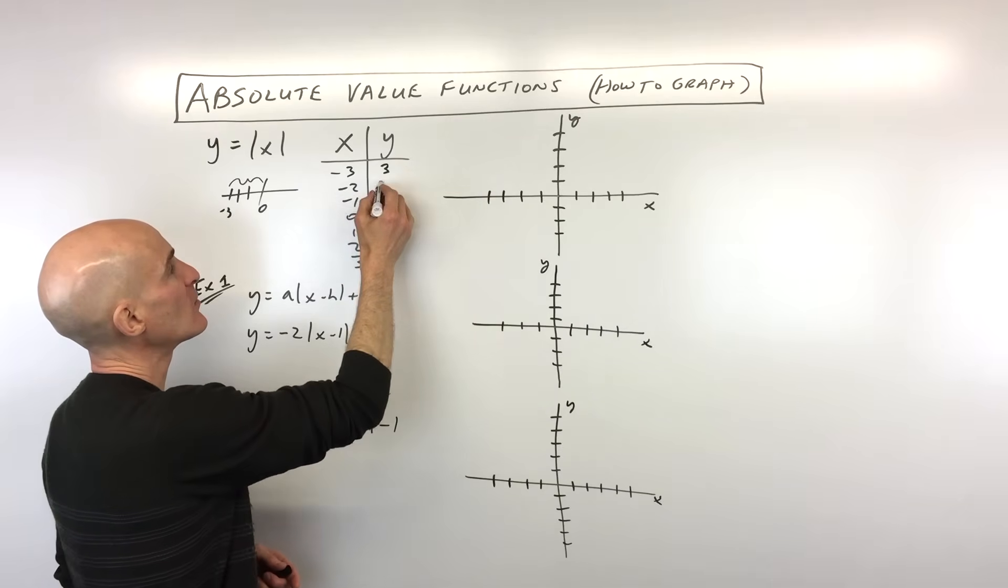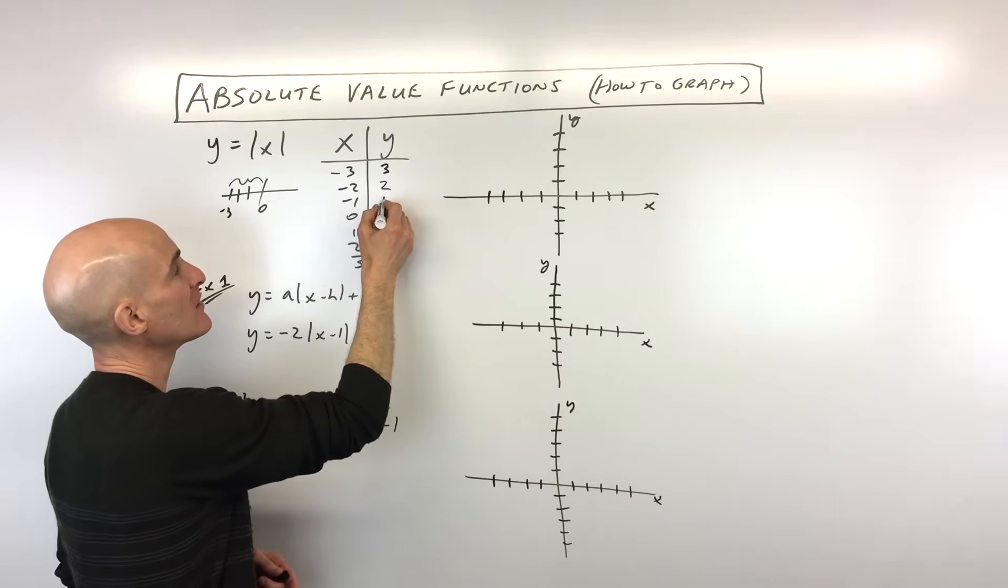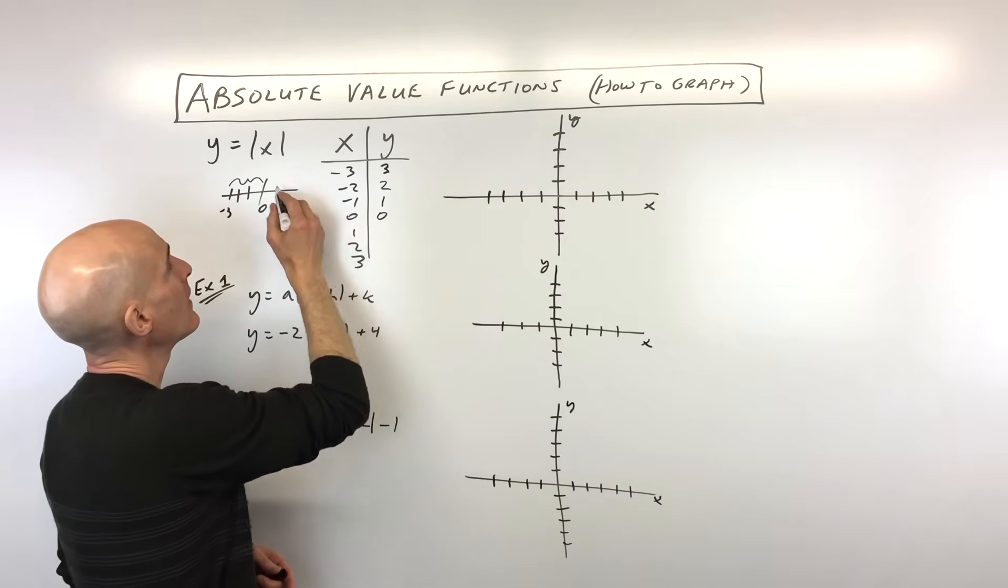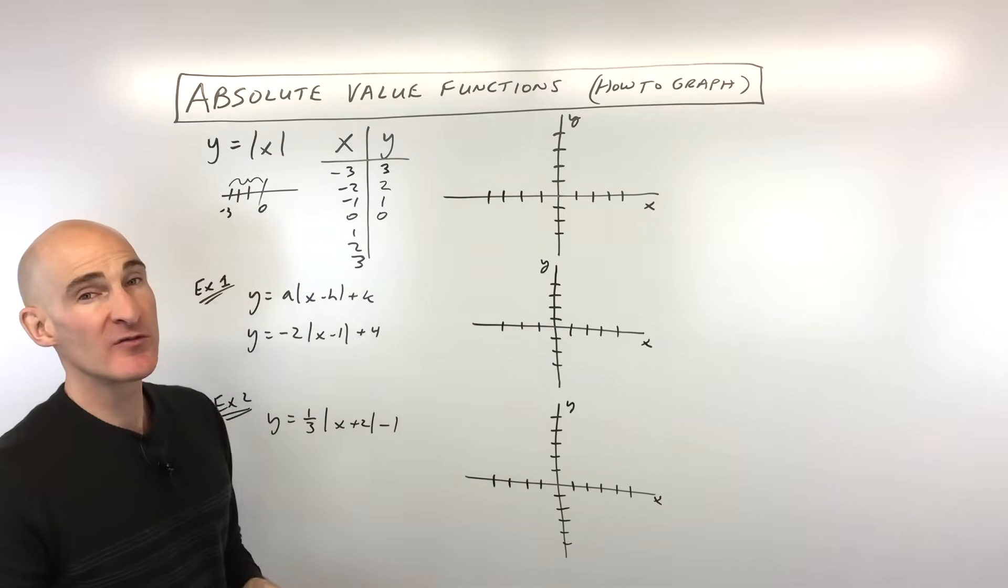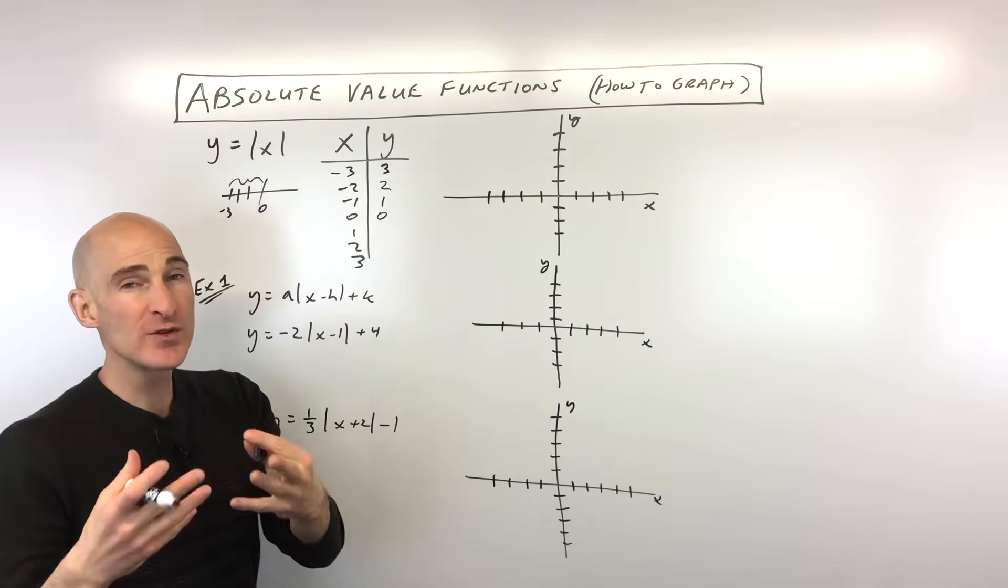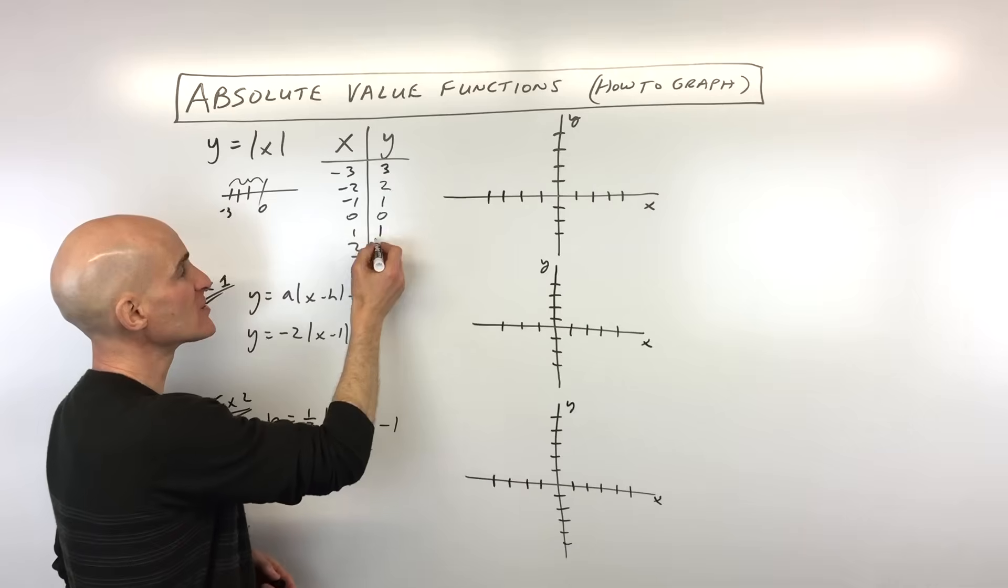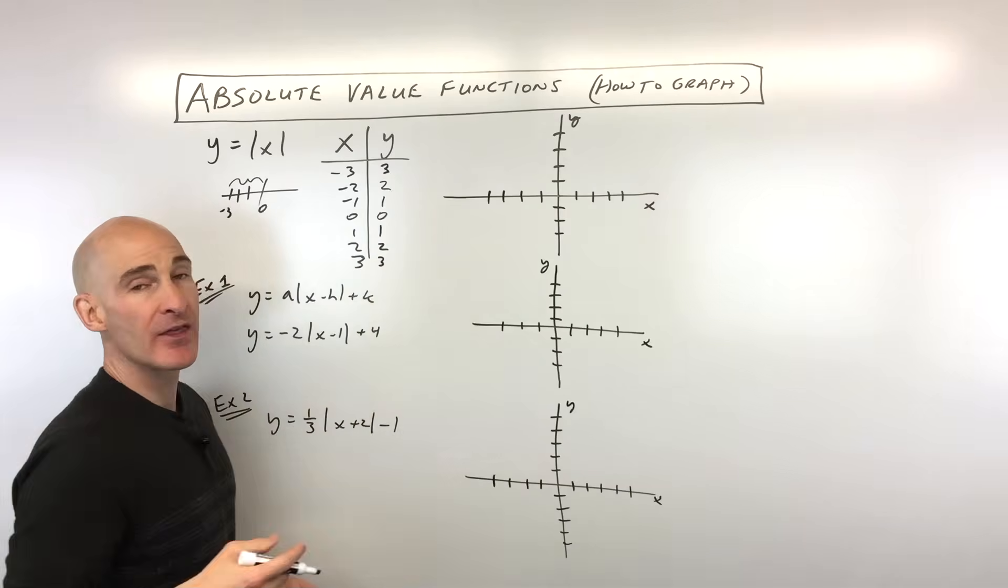The absolute value of negative 2, again, we make that positive. Negative 1, it becomes positive 1. 0, the absolute value of 0 is 0. Now, here sometimes students make a little bit of a mistake. Remember, the absolute value always makes it positive. It doesn't make it the opposite. It just makes it positive. So 1 is going to be 1, 2 is going to be 2, and 3 is going to be 3.